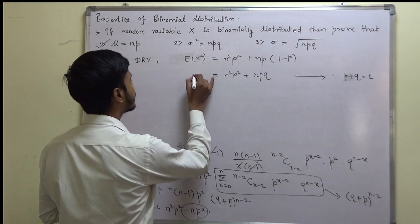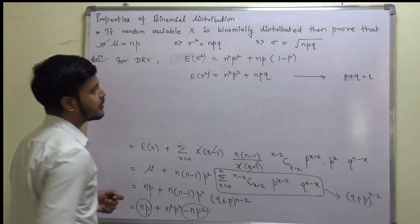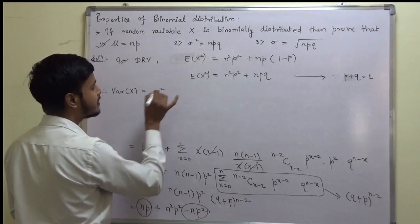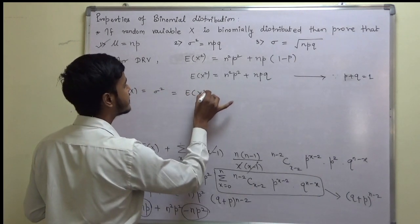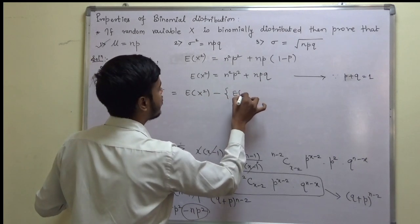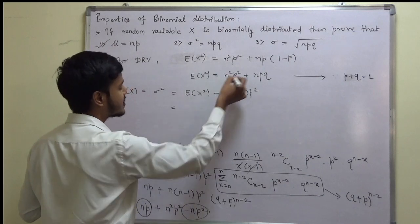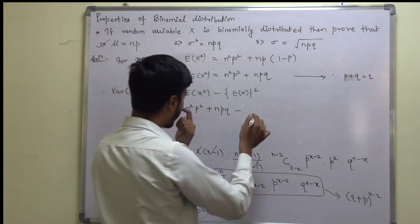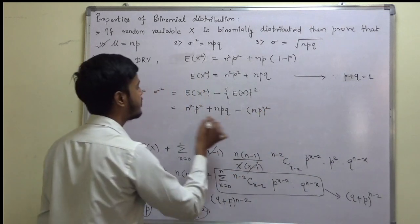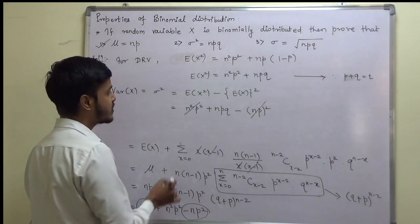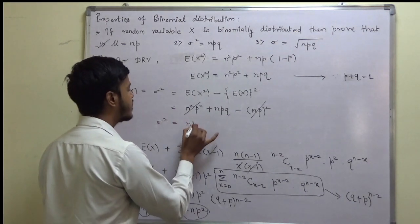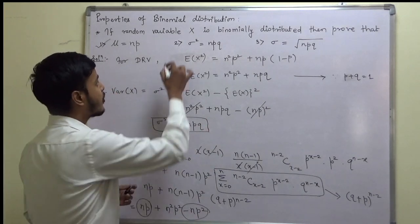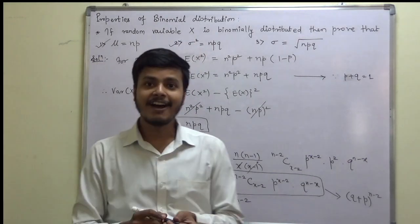So E(X²) = n²p² + np·q. Now I can find the variance. Variance of x (denoted sigma²) is E(X²) − [E(X)]², which is n²p² + npq minus (np)². The n²p² terms cancel, and we remain with sigma² (the variance) equal to npq. This completes the proof of the second property.